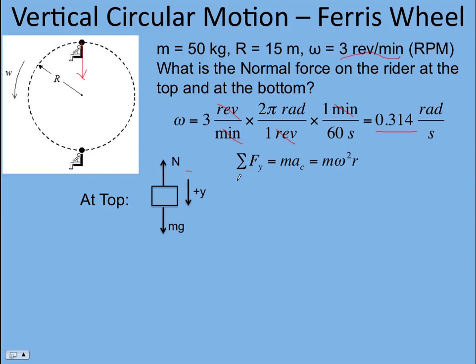Now we sum the forces in the y direction. It equals the mass times the acceleration, and this is a centripetal acceleration. And since we're given angular velocity, I'm using the angular velocity version of centripetal acceleration, omega squared r. Should be able to show how that is derived from v squared over r.